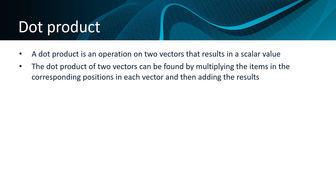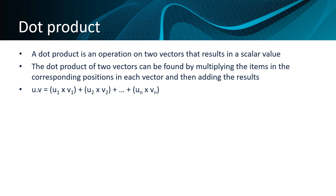The formula for the dot product of two vectors u and v is the first element in vector u multiplied by the first element in vector v, plus the second element in vector u times the second element in vector v, going on until we reach the nth element in vector u times the nth element in vector v.